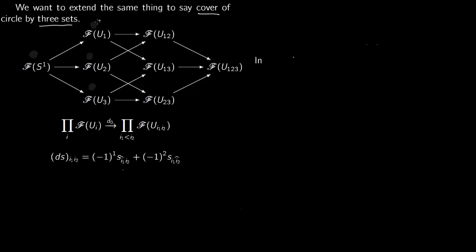Now we want to go to the second part. Say there are sections here: section S1 here, section S2 here, and section S3 here. Now we want to go to F of U12. This F of U12 comes from two places — two arrows coming into it, one arrow from here and the other from here. These two elements will combine to form an element here. So this S1 you write as S1-2-hat because 2 is missing. And this S2 you write as S1-hat-2, multiplied by the position of the missing index. This is what we did in the previous lecture — this is how you get an element of F(U12).